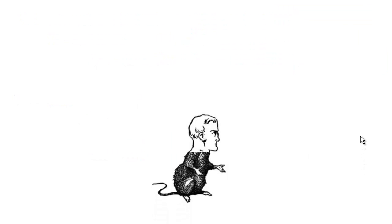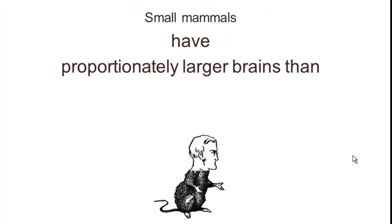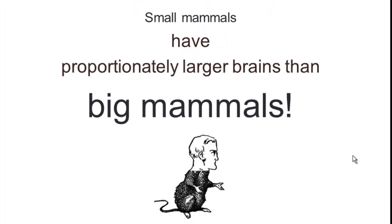But it turns out there's a problem with applying an isometric index to brain size. And this is shown by this hybrid human-mouse figure. It turns out that small mammals have proportionally bigger brains than do big mammals. And indeed, if we use an isometric index, the encephalization of a mouse is about equivalent to the encephalization of a human being. And that bothers us.